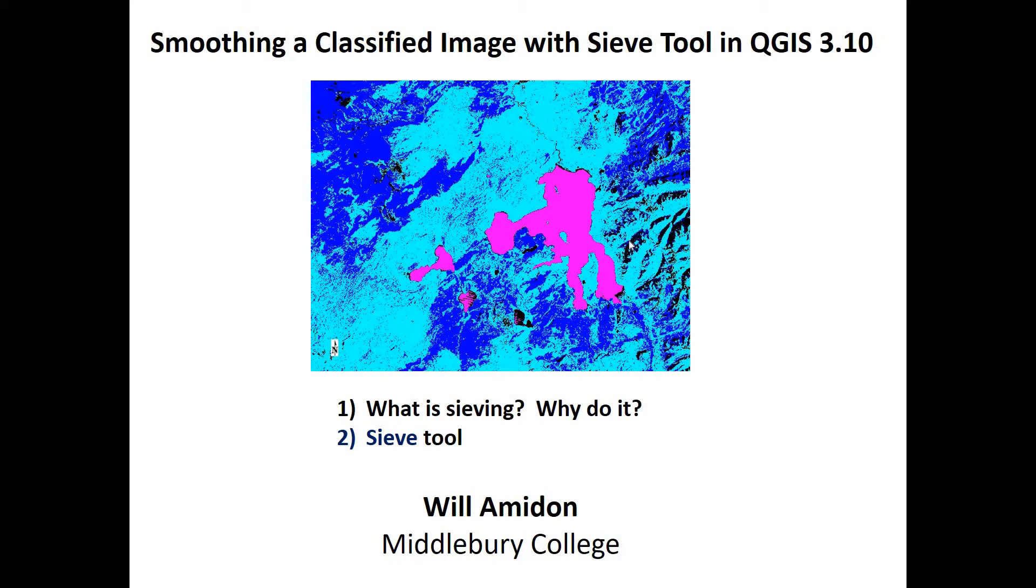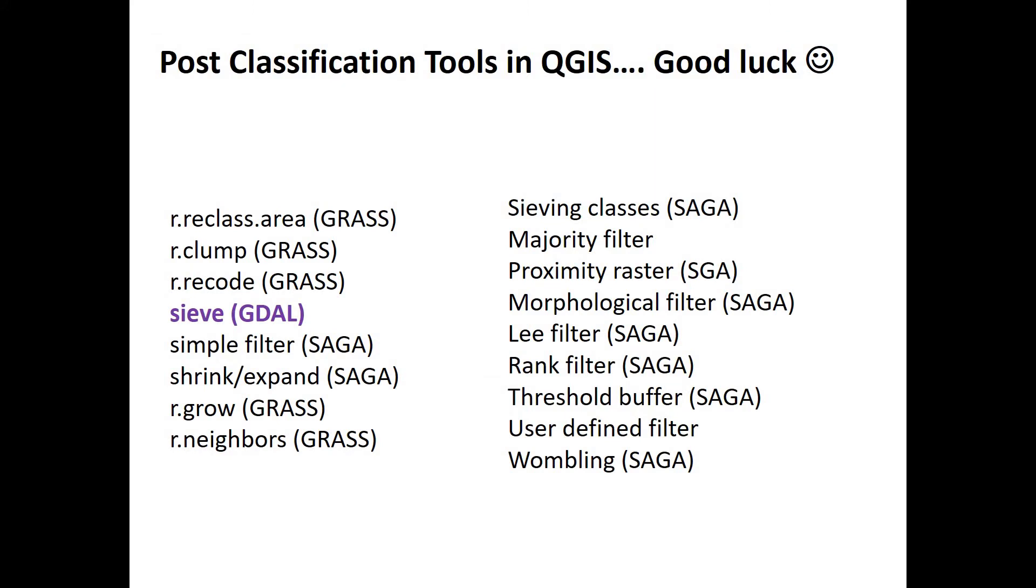So what the Sieve tool lets us do, it lets us sieve out the really small pixels as in they fall through the sieve and then we'll replace them with their neighboring values. In case you're interested in other post-classification tools in QGIS, I compiled this list of relevant tools that might help you and we're just going to focus on the Sieve tool today.